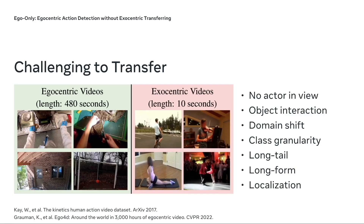However, by looking at examples from Ego4D and Kinetics, we notice many challenges in egocentric videos. There is usually no actor in view but more of hand-object interaction. There is also a domain shift in the activities performed. Egocentric actions are usually more fine-grained and thus long-tailed, with sometimes only a few samples per class. Egocentric videos are usually longer in duration and therefore require localizing actions within a video of similar appearance rather than classifying between videos. These all make it challenging for exocentric representations to transfer to the egocentric domain.